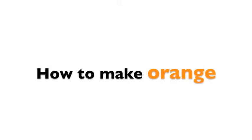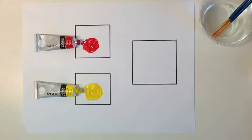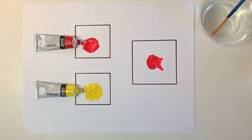How to make orange? When we add the primary colors of red and yellow together, we will get orange. Let's make orange.